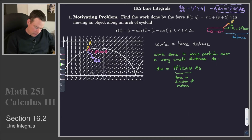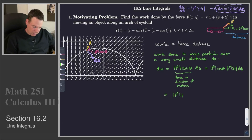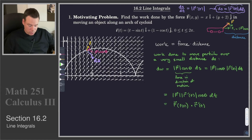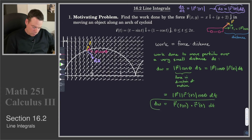We can write dW now as: the first part is the magnitude of the force field times cosine of theta, and then ds becomes the magnitude of r' dt. Rearranging, that's the magnitude of F times the magnitude of r'(t) times cosine of theta, all times dt. But theta is the angle between F and r', so this expression is just a dot product — it's the force F at the point r on the curve dotted with r'. So that's our work element — the work done to move the particle over a really small segment of the arc.